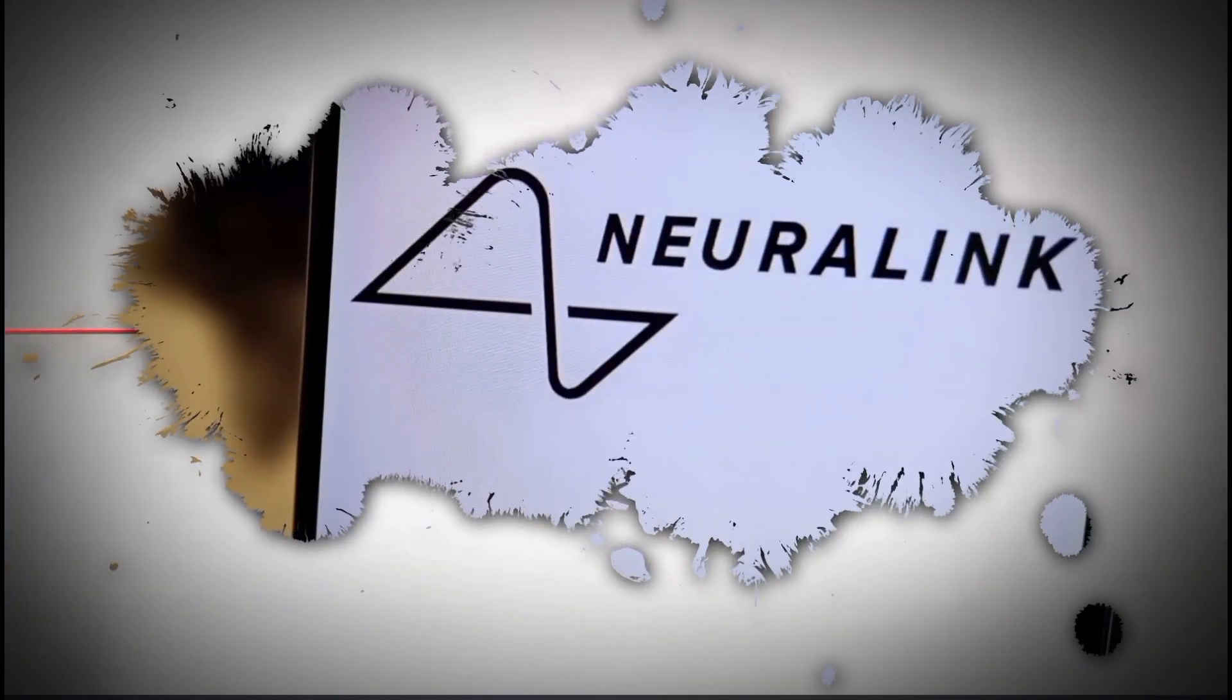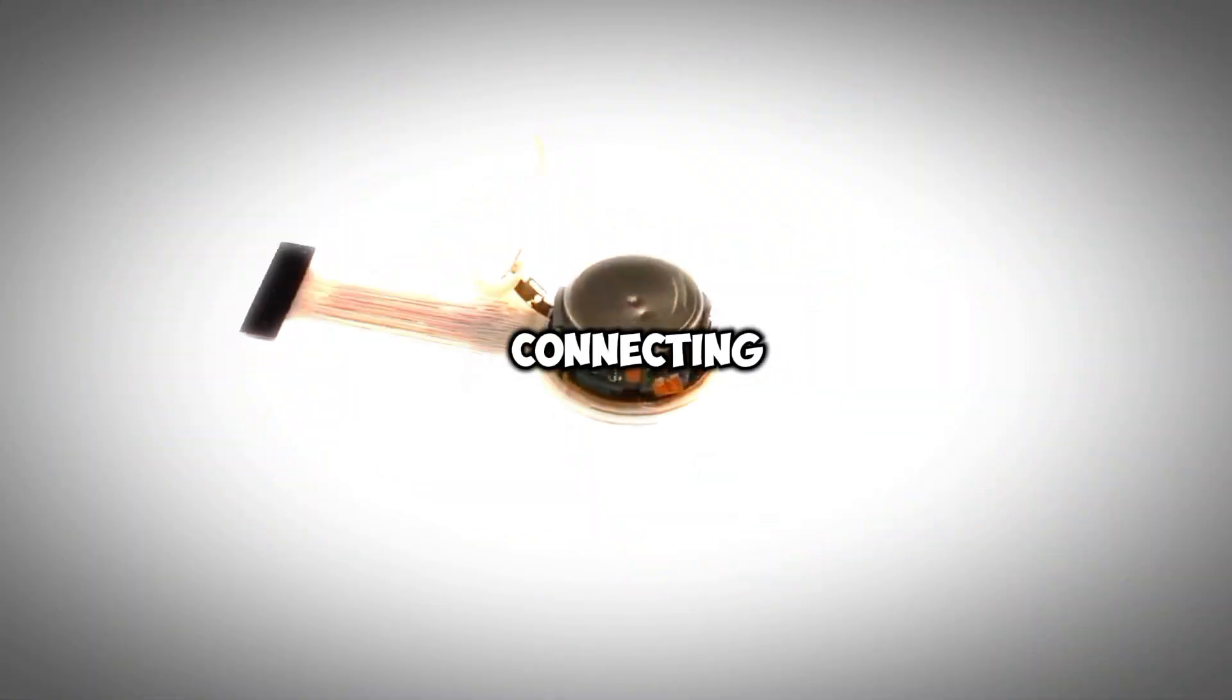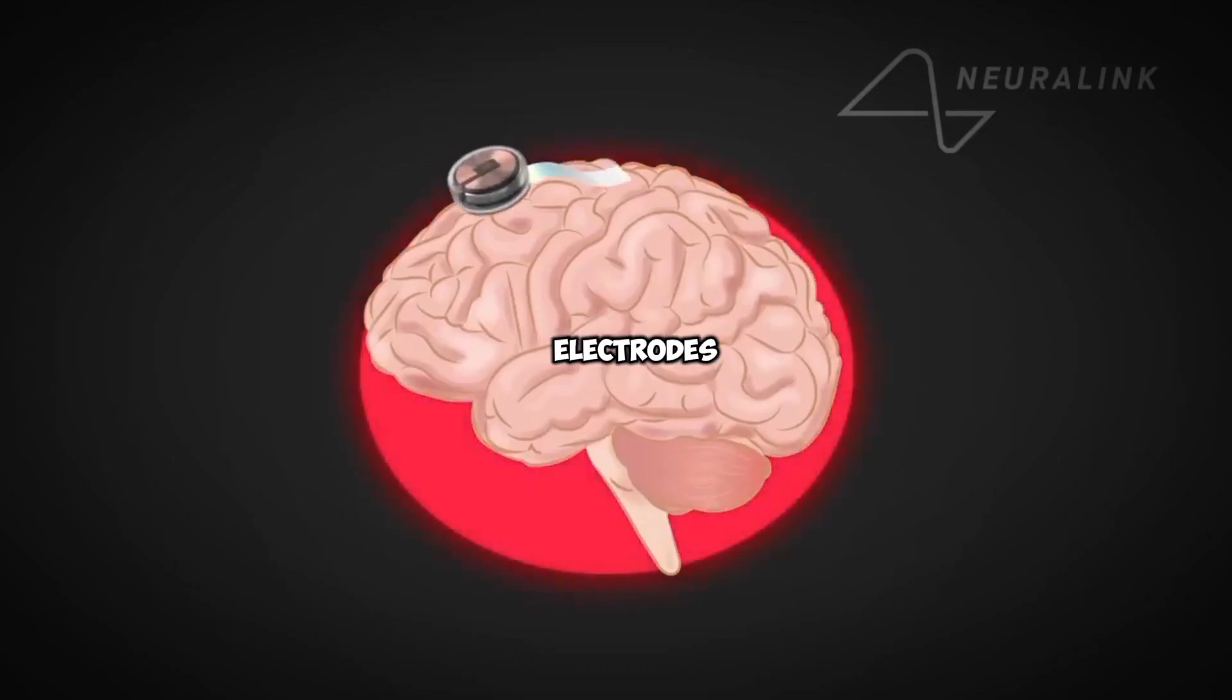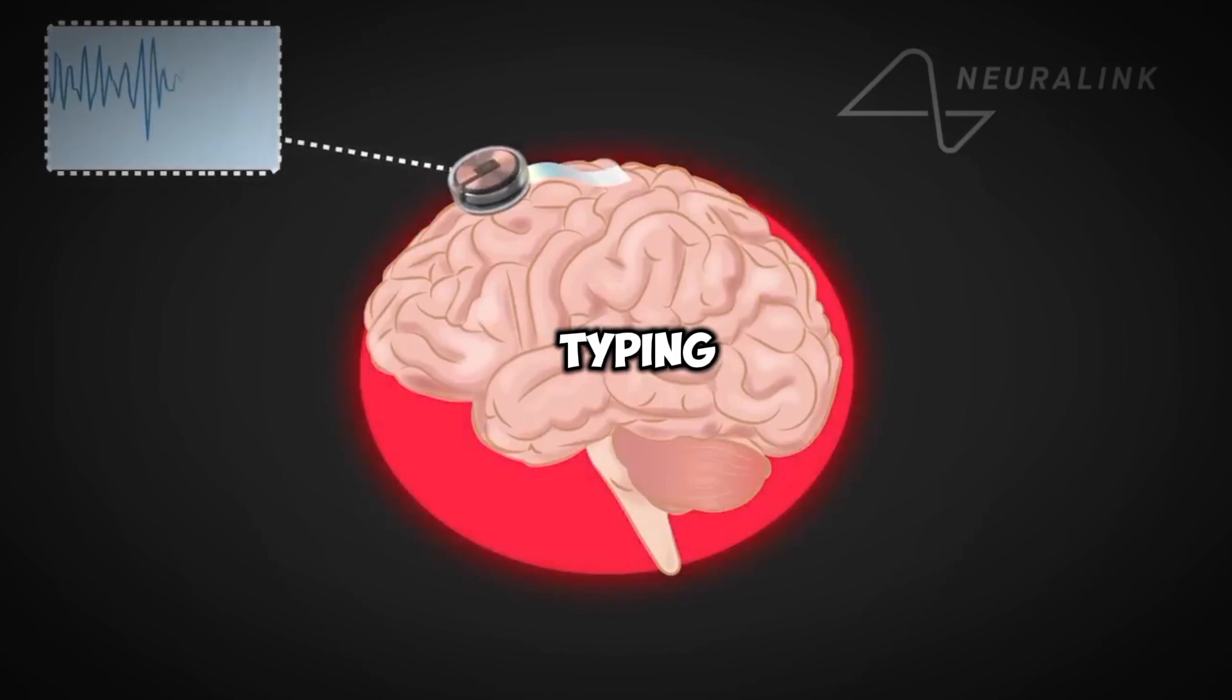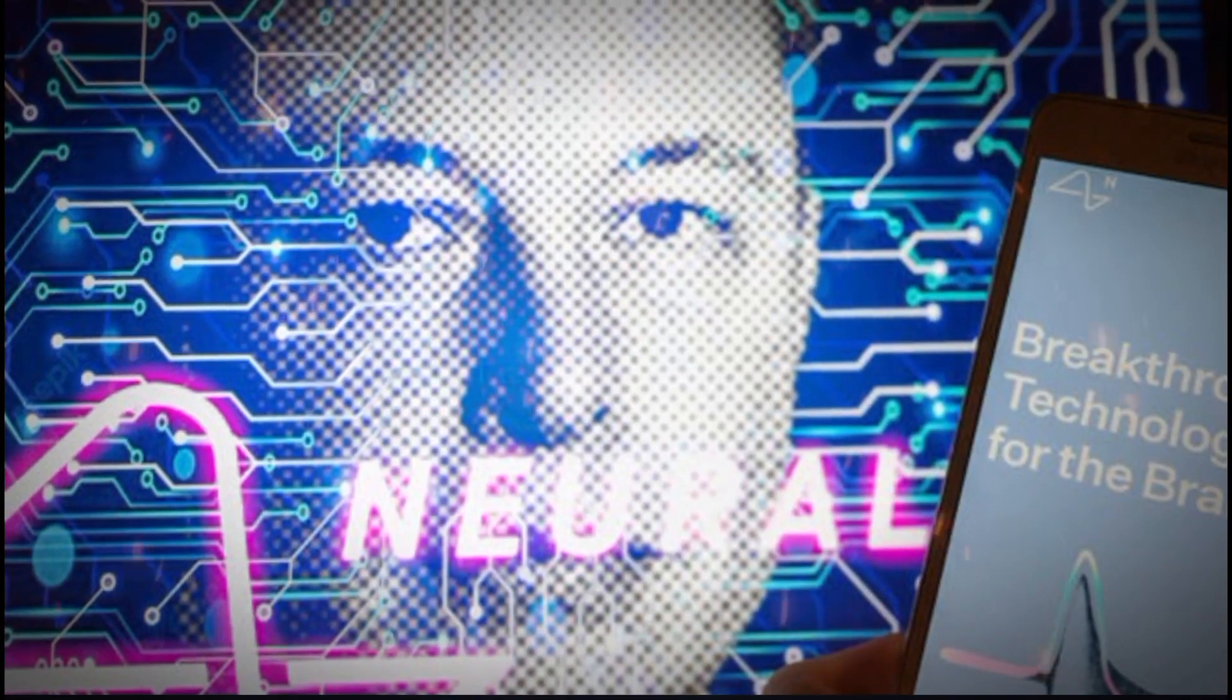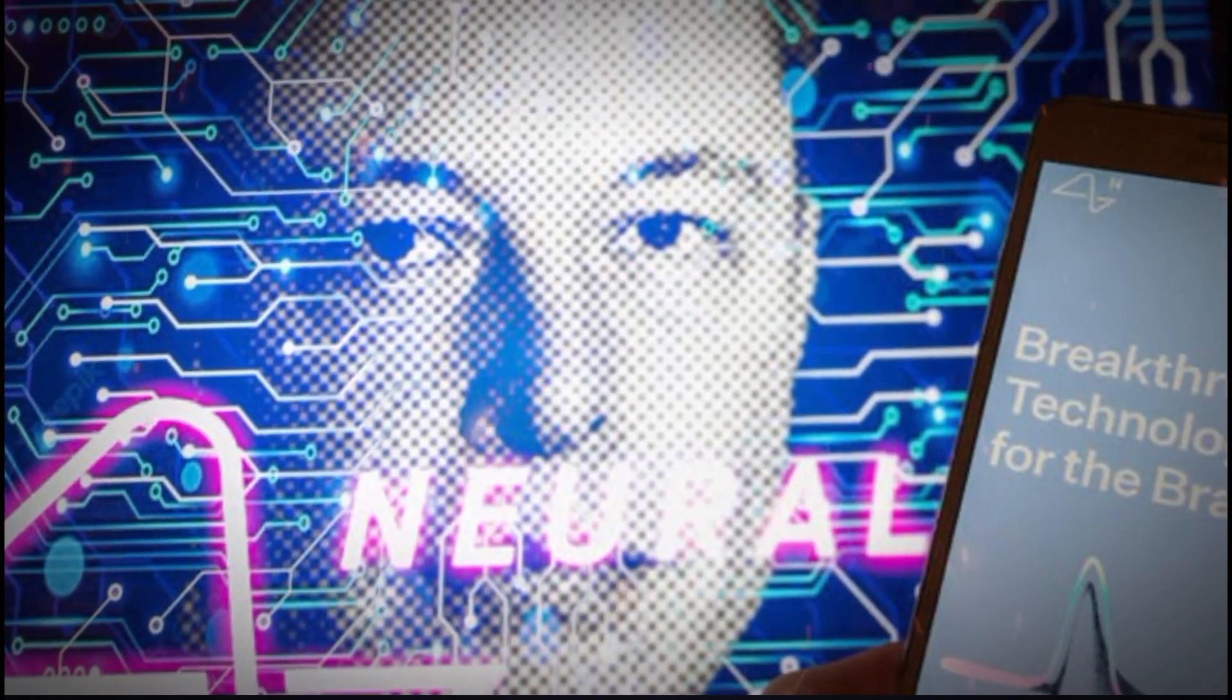Upon closer inspection, Neuralink's technology works by connecting tiny flexible electrodes to neurons in the motor cortex. These electrodes can record electrical signals whenever someone imagines moving a limb or typing a sentence. The chip then wirelessly transmits this neural data to devices like a phone or computer. In essence, the technology allows controlling devices purely by thinking about desired actions.